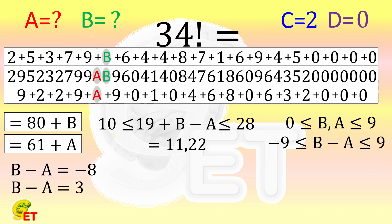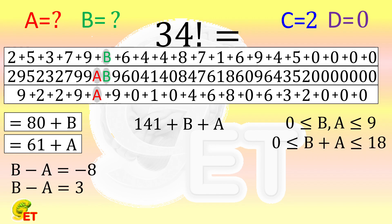If we consider the divisibility by 9, we have to add up 80 plus B and 61 plus A. That is 141 plus B plus A. In this case, we have to consider the range of B plus A, which should be between 0 and 18. The range of 141 plus B plus A is between 141 and 159. There are also two numbers in this range that are divisible by 9, and they are 144 and 153. That is, B plus A may be equal to 3, or it may be equal to 12.